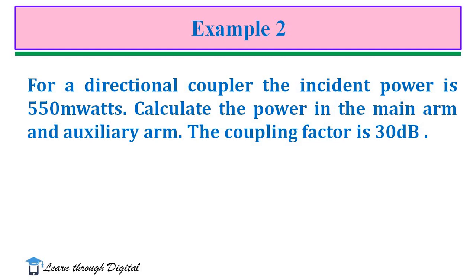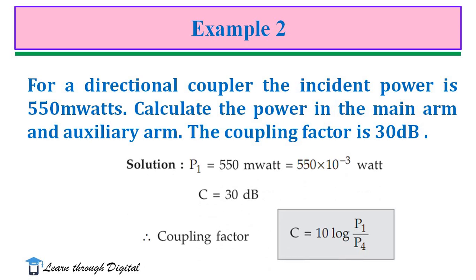We have to find what is the power in the main arm and auxiliary arm. First, we write down this. P1 is 550mW. C is given 30dB.